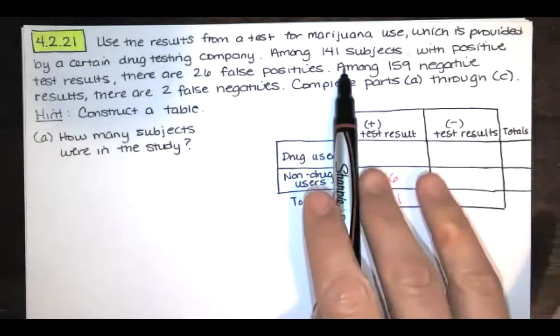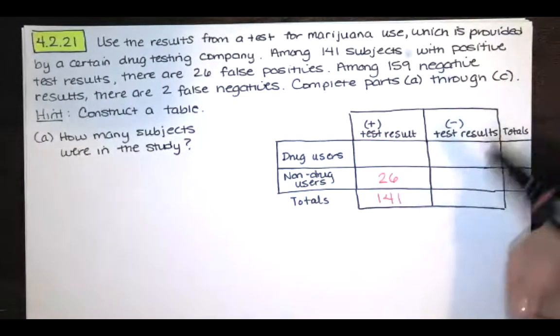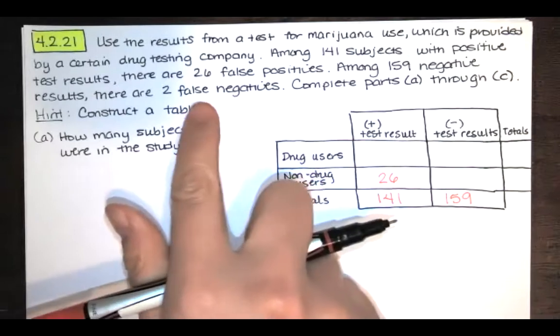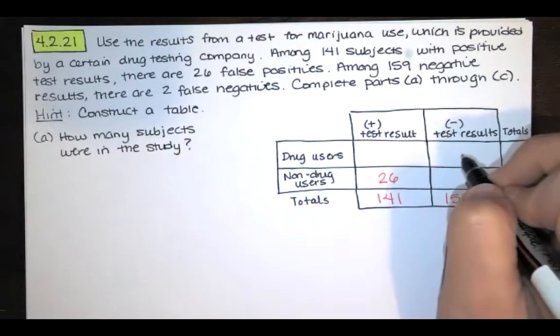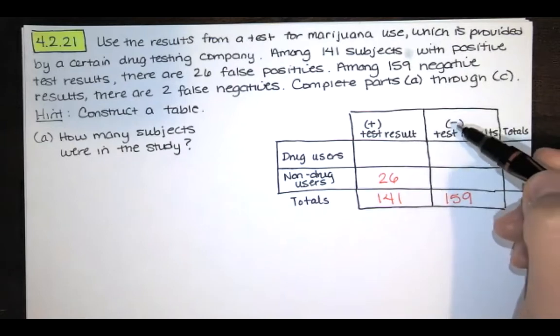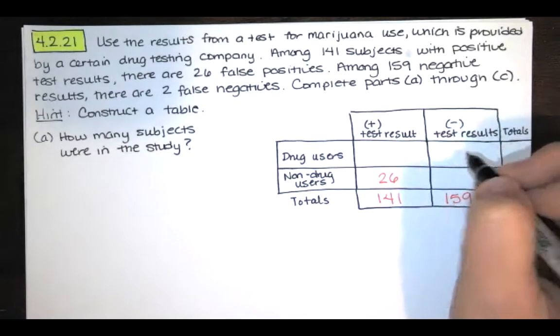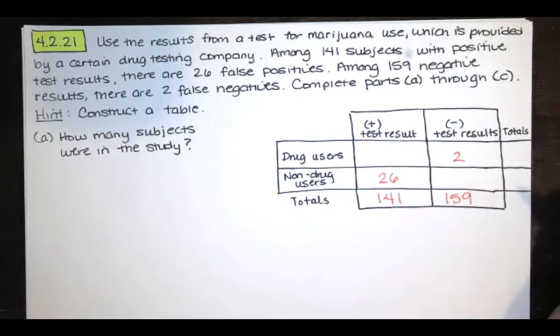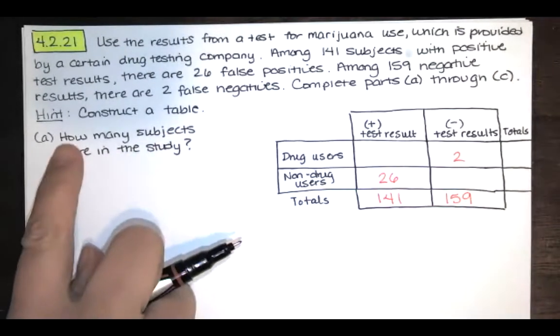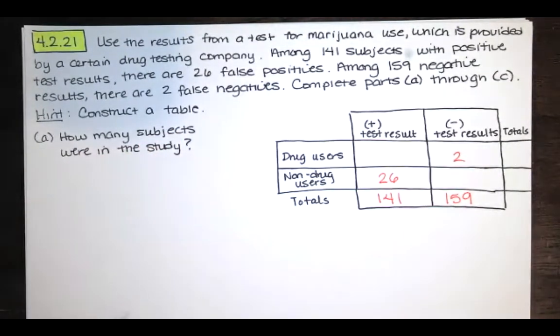And then it says among 159 negative results, there are two false negatives. And a false negative is a negative test result. So it says that the person does not use drugs when they actually do. And the hint is construct a table. The first thing says how many subjects are in the study?